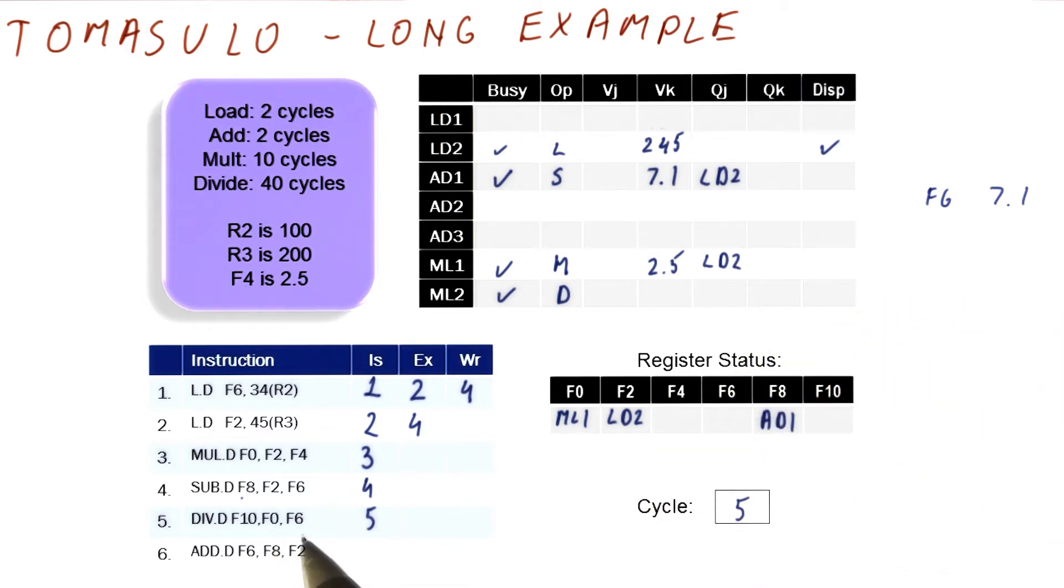We're going to look at F0 and F6 as our inputs. F0 comes from ML1. F6 is actually in the register file because this doesn't say.